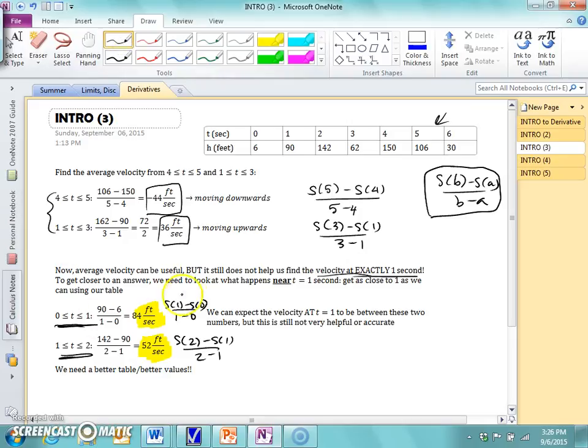And I got 84 feet per second from 0 to 1 seconds and 52 feet per second from 1 to 2 seconds. Now these numbers are really far apart, so that's not accurate or helpful. So we're going to need a better table with some better values.